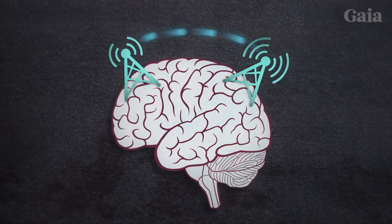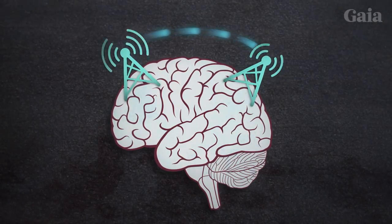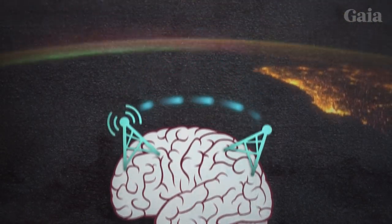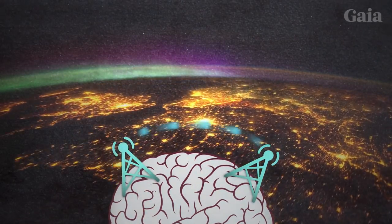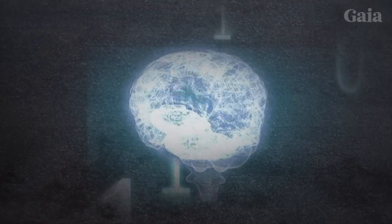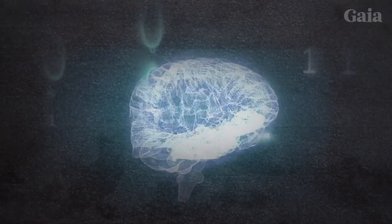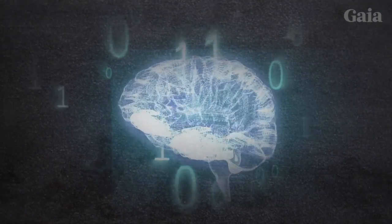Magnetite also acts as an antenna for external electromagnetic fields, including the geomagnetic field of the Earth itself. And this is where things start to get interesting. An enormous body of research is emerging that shows substantive links between magnetic fields and cognitive function.